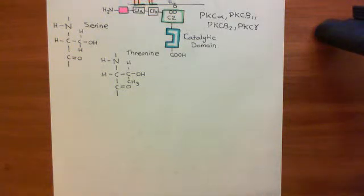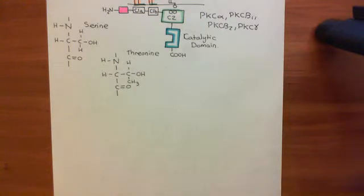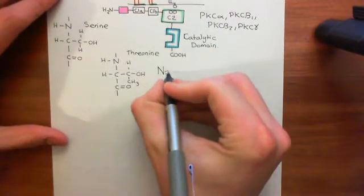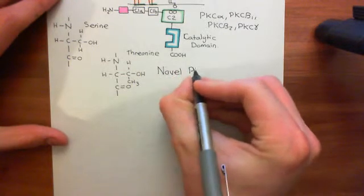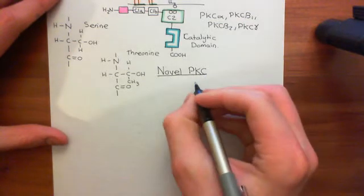Welcome to this next video in which we are discussing the protein kinase C pathway. We're finally discussing the different types of protein kinase C and how they're going to be activated by the calcium released into the ER and the diacylglycerol molecules produced in the inner leaflet of the phospholipid bilayer. We've discussed the conventional protein kinases, which need both calcium and diacylglycerol. We're now going to discuss the novel protein kinases, which only require diacylglycerol and do not require the calcium signal.